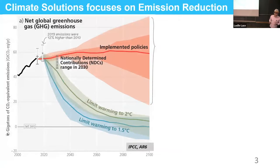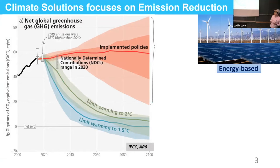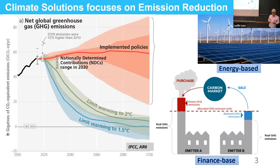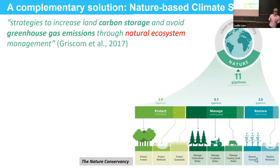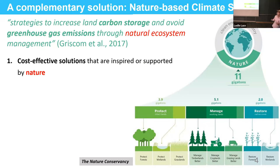To achieve these climate goals, there are several climate solutions focused on reducing greenhouse gas emissions — for example, energy-based solutions that use renewable or biomass energy to substitute traditional fossil fuel consumption, or finance-based solutions that let carbon pricing regulate the supply and demand of the carbon market. Today I will focus on another set: the nature-based climate solution, NBCS, which represents strategies to increase land carbon storage and avoid greenhouse gas emissions through natural ecosystem management.